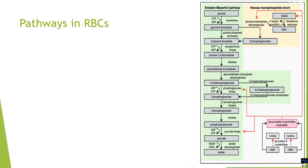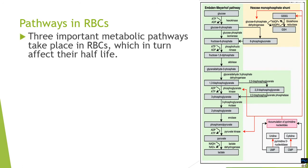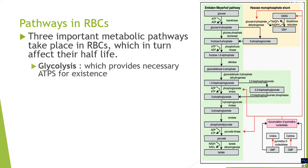In RBCs, there are three different metabolic pathways which take place for the oxidation and utilization of glucose, which in turn also affects their half-life. The first of these three pathways is the Embden-Meyerhof pathway, also called glycolysis, which provides the necessary ATP for the RBC's existence and day-to-day function.